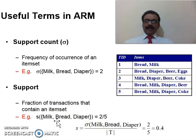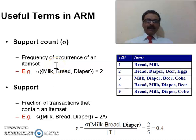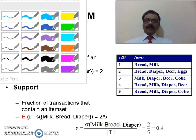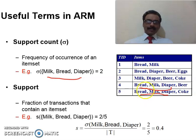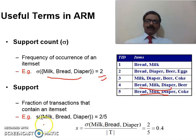Another important term is support count — the frequency of occurrence of an item set, i.e., how often a particular item set appears in transactions. In our example with milk, bread, and diaper: looking through the five transactions, milk, bread, and diaper appear together in two of the transactions. So the support count of {milk, bread, diaper} is two, because they appear together in two transactions.